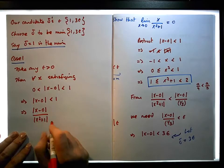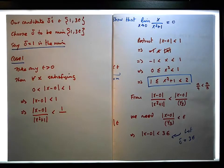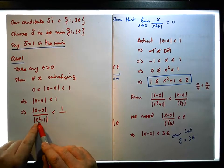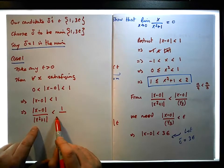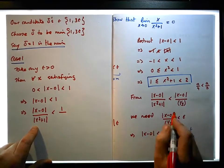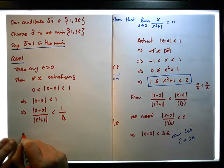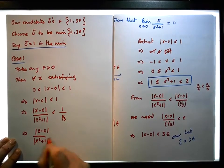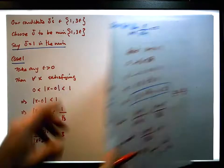We have x squared plus one, and it must be less than one. If we can find a number smaller than x squared plus one, then this expression is less than one over that number. We've chosen one third, so it must be less than one third, which implies that x minus zero over x squared plus one must be less than three.